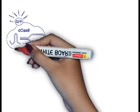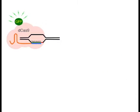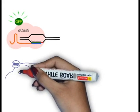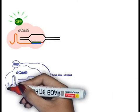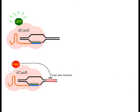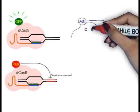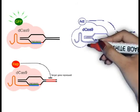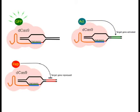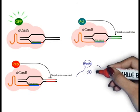The dCas9 is a variant of Cas9 that has had its nuclease activity deactivated. This results in the Cas9 being able to target and bind specific genomic regions without producing any cleavage of the DNA strands. When coupled with fluorescence proteins or effector domains, it can be used for visualization, gene silencing, or gene activation experiments.